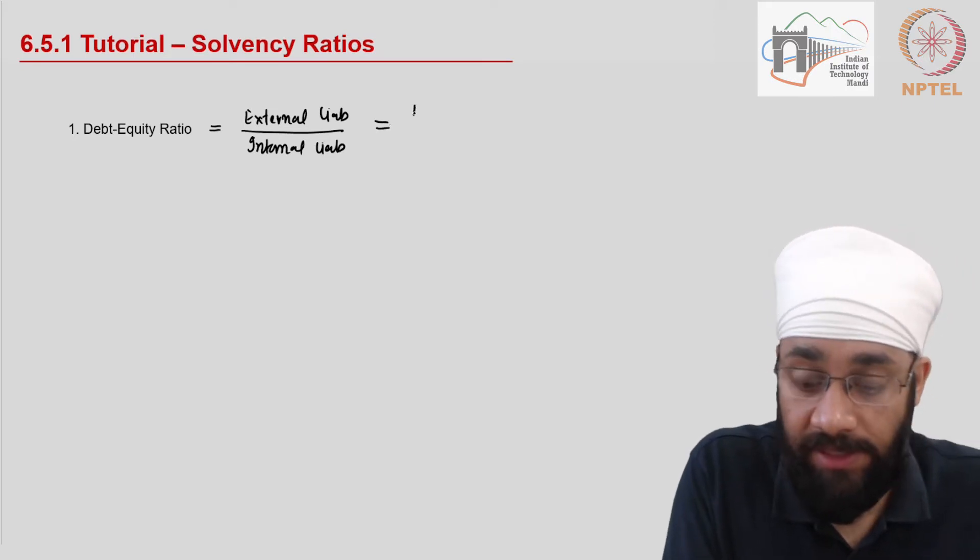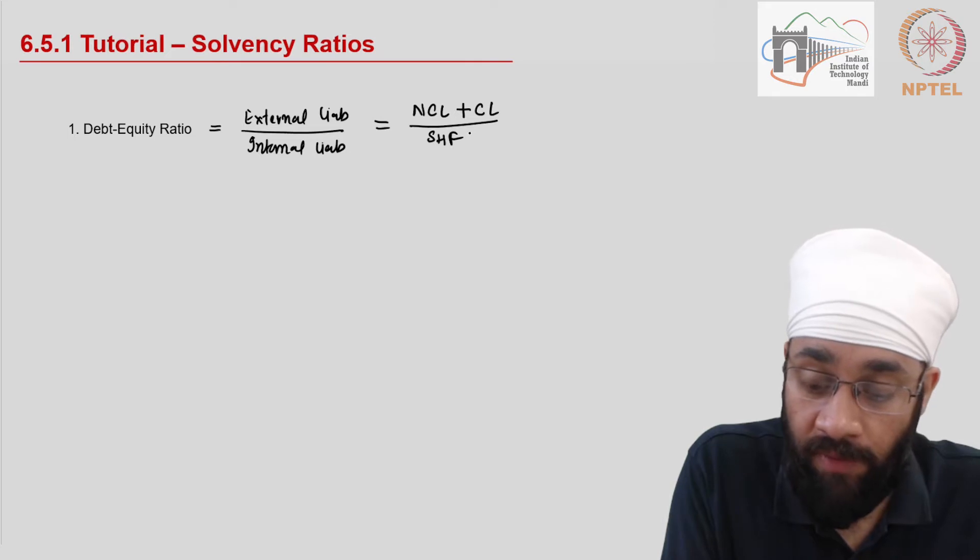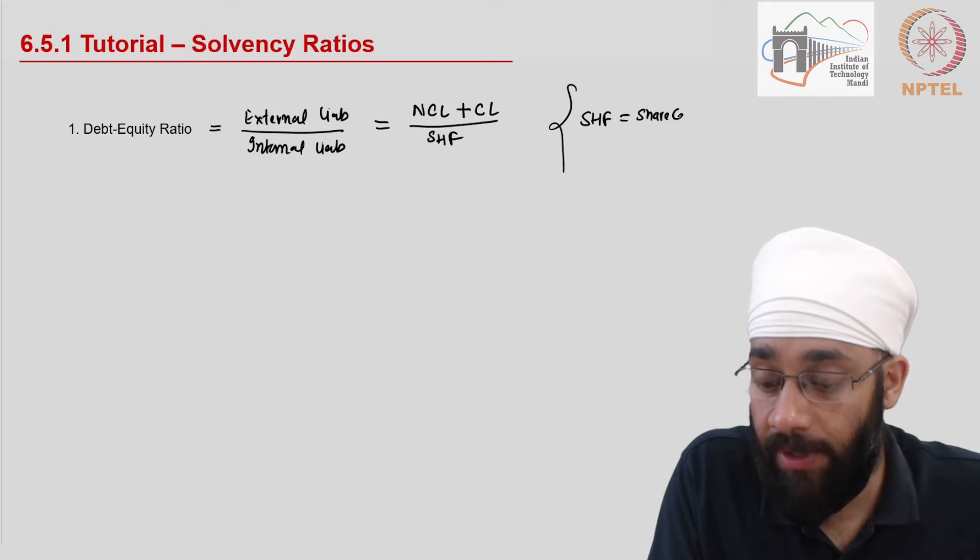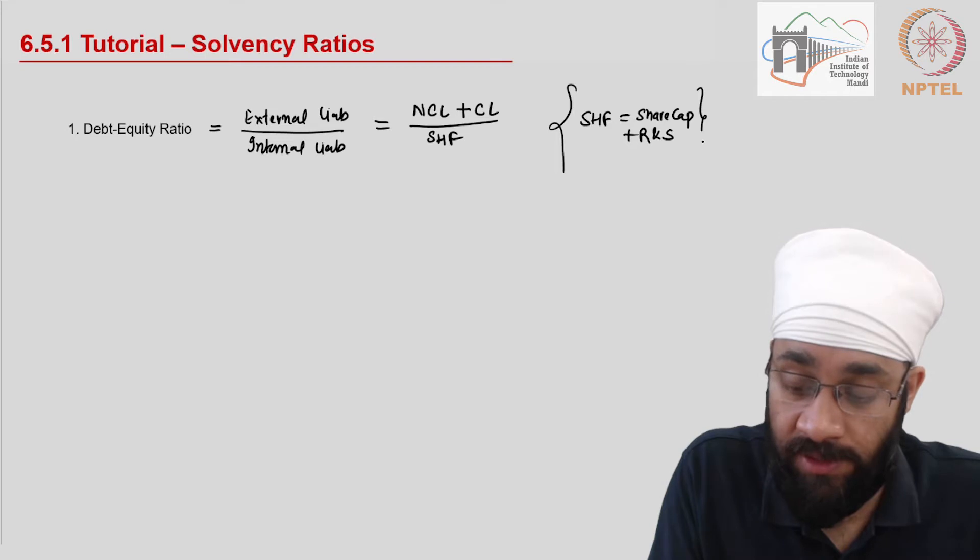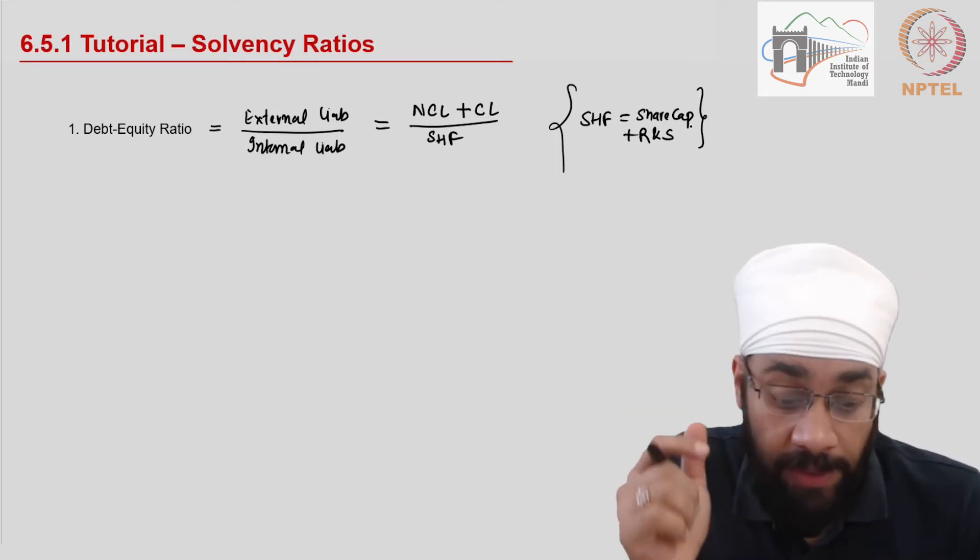The external liabilities comprise of non-current liabilities plus current liabilities, and the internal liabilities are shareholder funds where the shareholder funds are equal to share capital plus reserves and surpluses. Practically the first section on the liability side in the balance sheet.